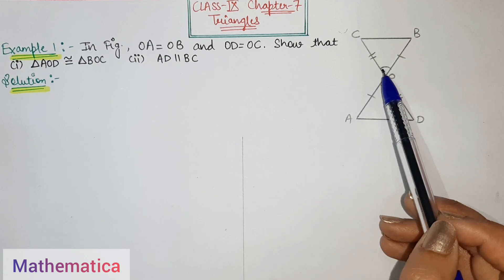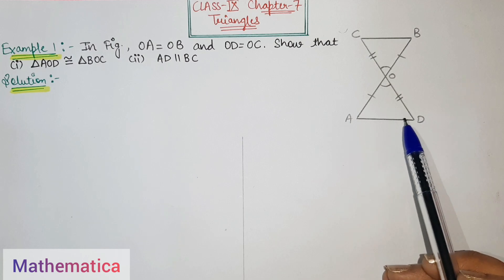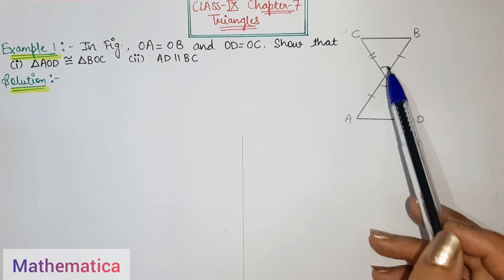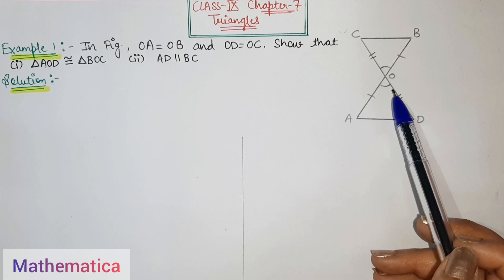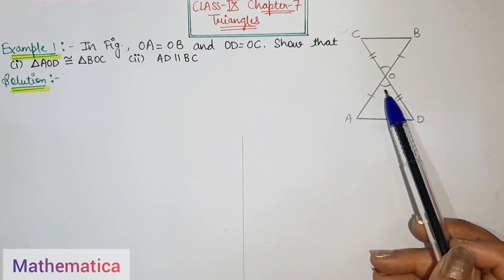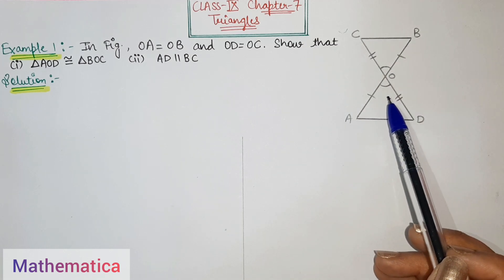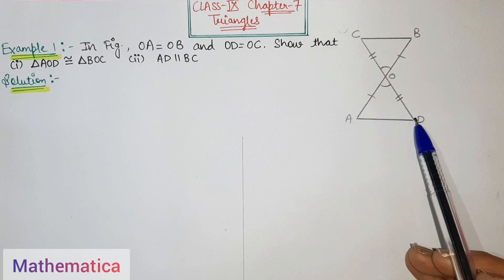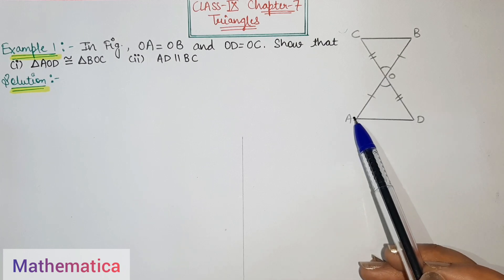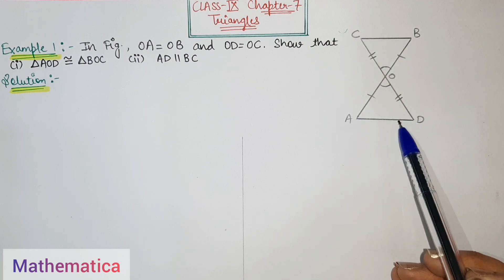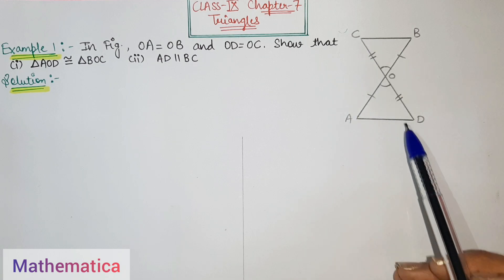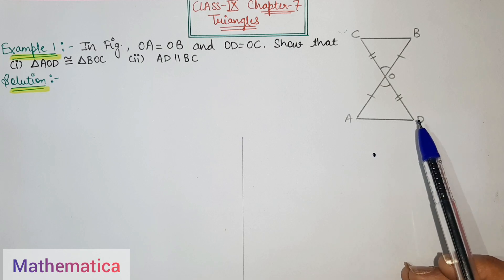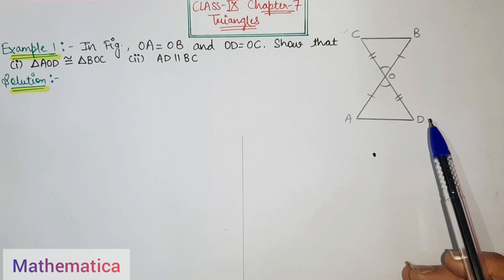Angle COB will equal angle DOA because of vertically opposite angles, so these two triangles become congruent. To make the corresponding parts equal, we can write that angle ODA equals angle OCB. When alternate angles are equal, the lines are parallel — so the concept is not difficult.